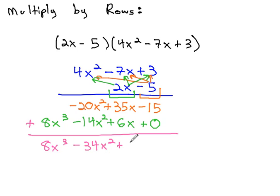Plus 35x and 6x is 41x, and finally we have the minus 15 for our final product.